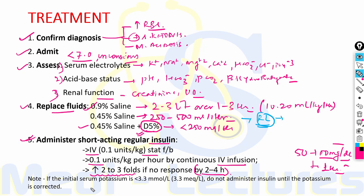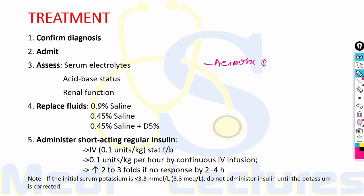If initial serum potassium is less than 3.3 mEq/L, do not administer insulin until potassium is corrected, otherwise there can be life-threatening hypokalemia. IV insulin should be continued until the acidosis resolves and the patient is metabolically stable.